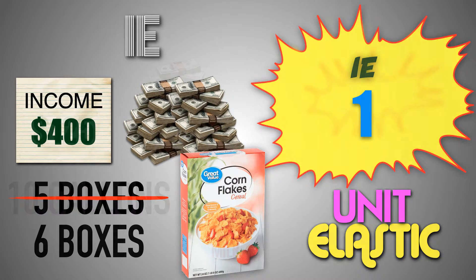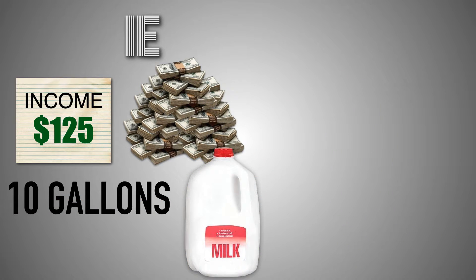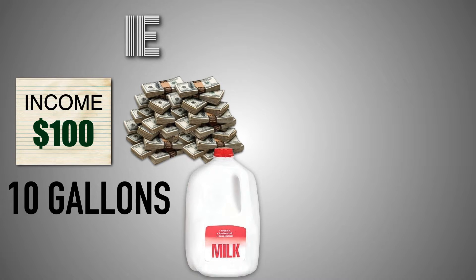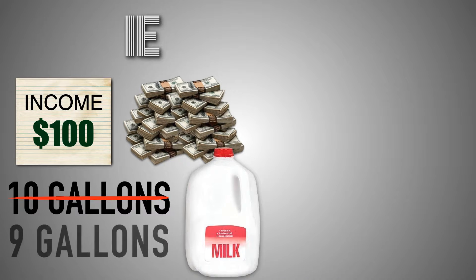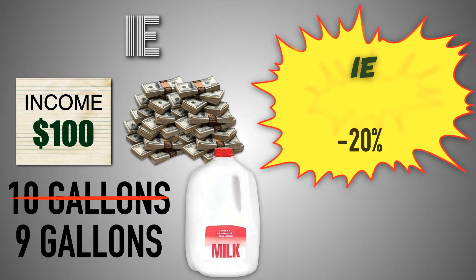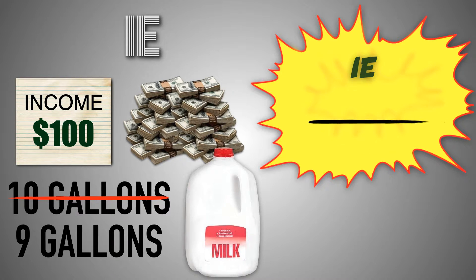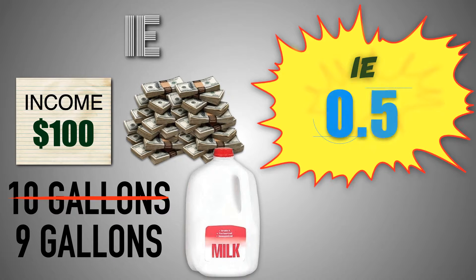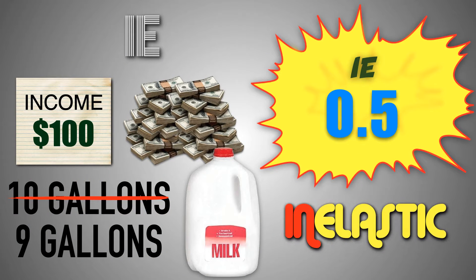Finally, suppose that a consumer's disposable income decreases from $125 to $100, and their demand for milk, a normal good, decreases from 10 gallons to 9 gallons. When the consumer's disposable income fell by 20%, the consumer decreased their consumption of milk by 10%. This gives us an income elasticity coefficient of 0.5, which means that the consumer's demand for milk, a normal good, is income inelastic.